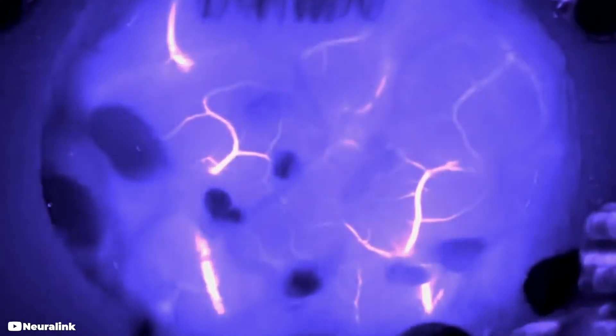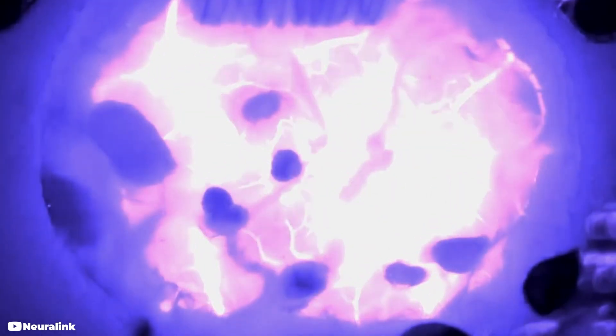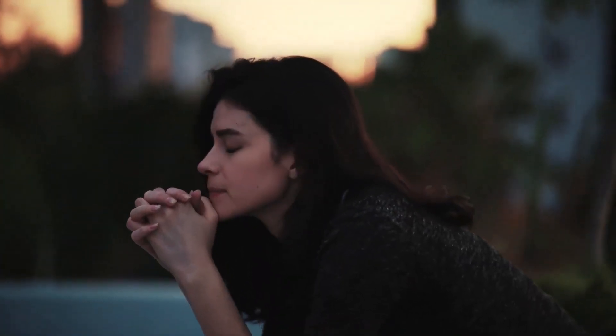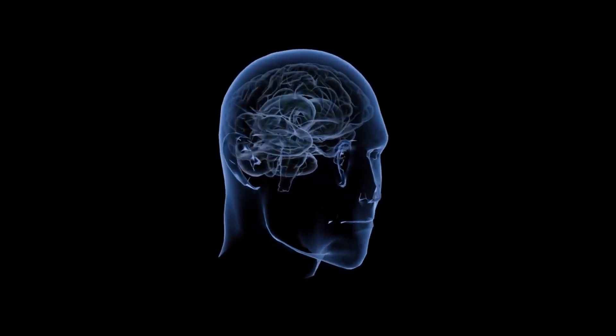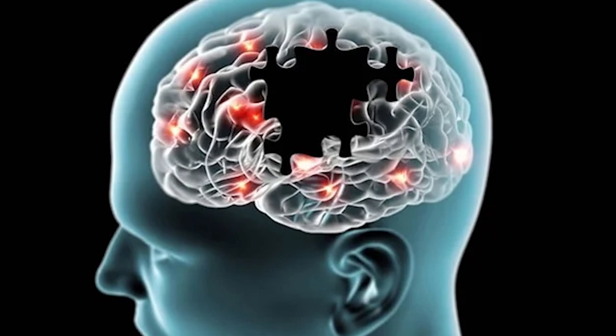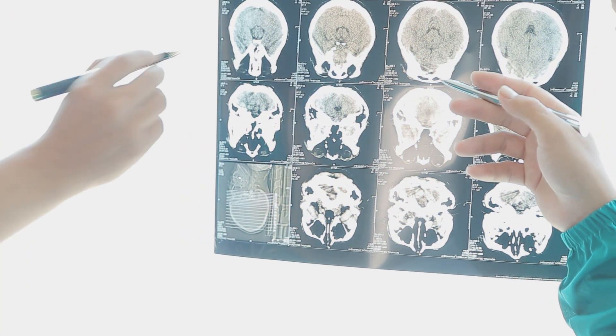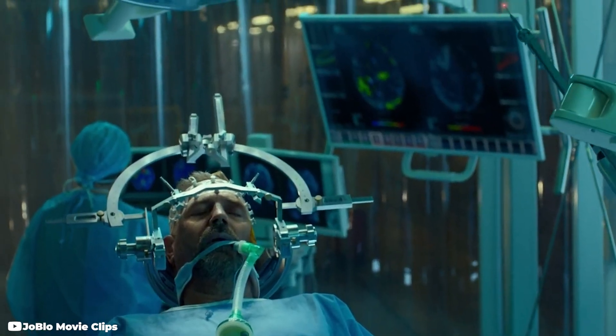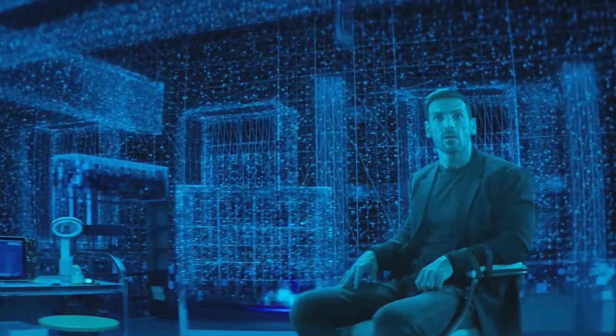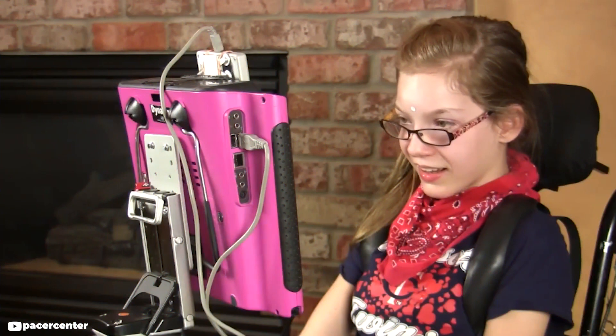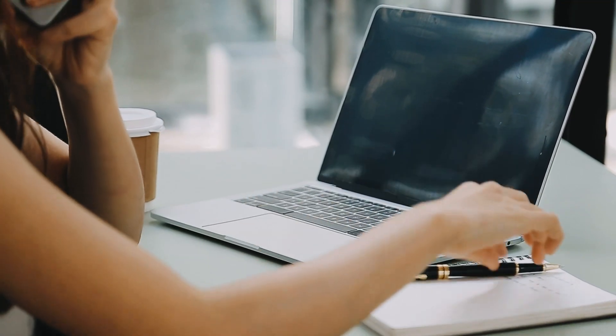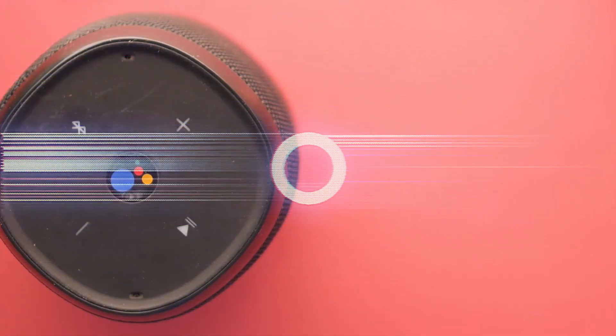Neuralink is exploring the possibility of using brain-machine interfaces to enhance human cognitive abilities, such as memory, attention, and problem solving. This could be especially useful for people with conditions that affect cognitive function, such as Alzheimer's disease or traumatic brain injury. Another potential application of Neuralink's technology is the ability to control devices with thought alone. This could be used to operate prosthetics, assistive devices, or even consumer electronics, such as smartphones or smart home devices.